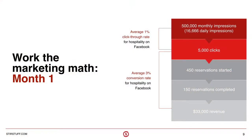As Michael mentioned, it's really important to have clearly defined objectives. One way we approach that here at STR is we work the marketing math. Starting from the bottom of this chart and working back up: we know we need about $33,000 in revenue. Given the ADR that typically generates, we need about 150 reservations. Based on typical start and complete reservation rates, we need about 450 online reservations started. Working backwards, we need to achieve about 5,000 clicks to the website from our social campaign, based off of about half a million impressions. These are industry benchmarks, but we feel very strongly that the best benchmarks are your own.